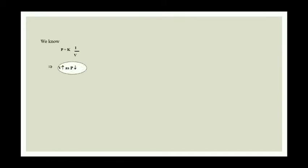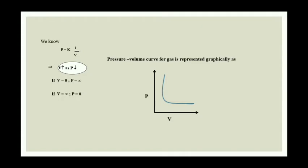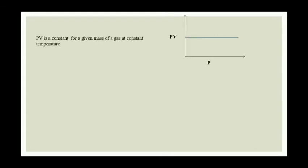We know P = K × (1/V). So as V increases, P decreases. If we plot a graph between pressure and volume, we get a rectangular hyperbola. If you plot PV versus P, the graph will be a straight line, since PV equals a constant throughout. If you take the log of PV = K, you get log P = log K − log V, which is of the form Y = MX + C. Plotting log P versus log V also gives a straight line.